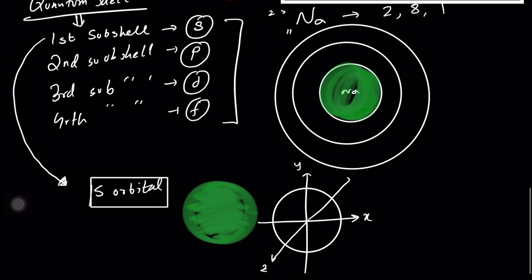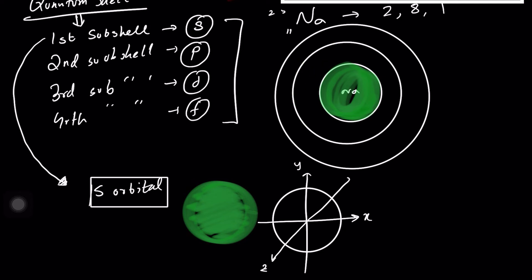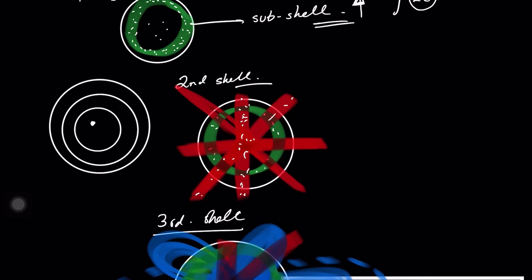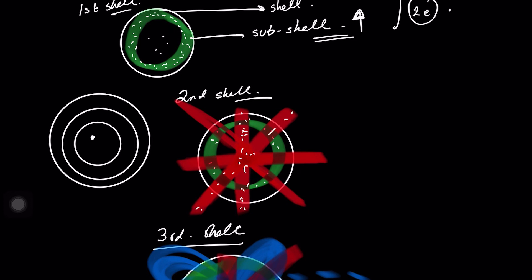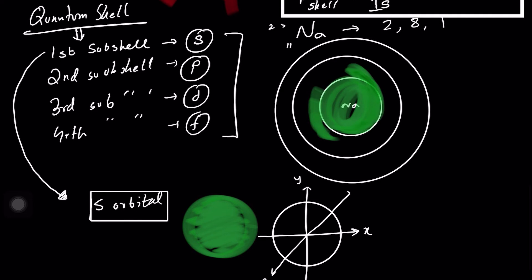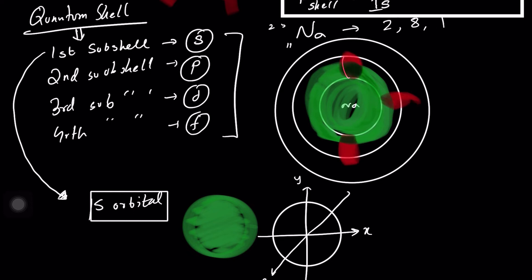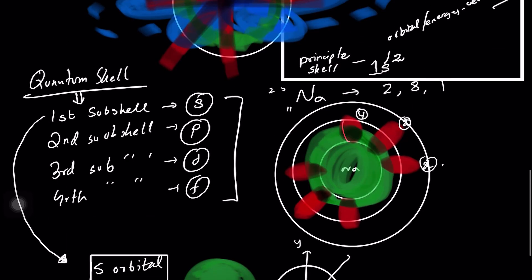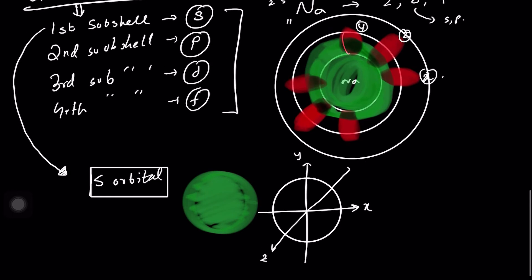Now let's look at the second shell. In the second shell we have the green S-type region, but we also have the red region — the P orbitals. The P orbital extends in different dimensions: the Y dimension, the X dimension, and the Z dimension. Each dimension of the locus is known as an orbital, and all three together form the P subshell.